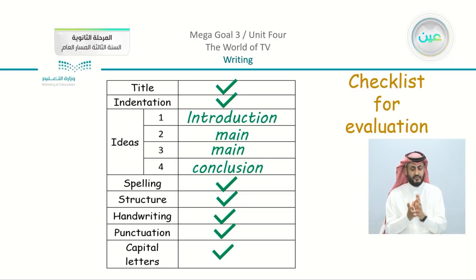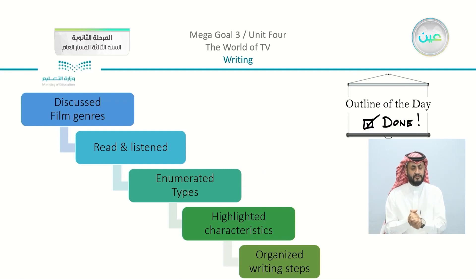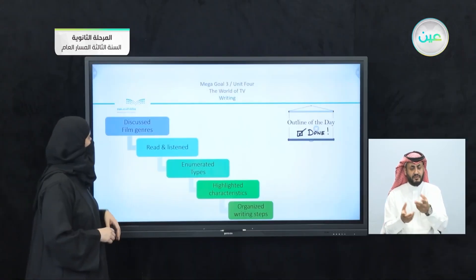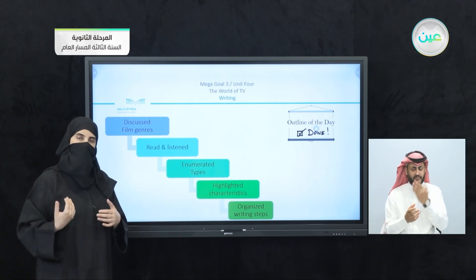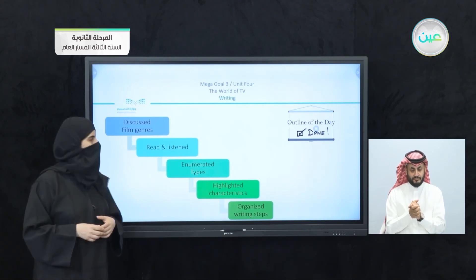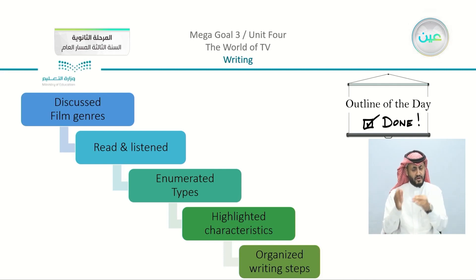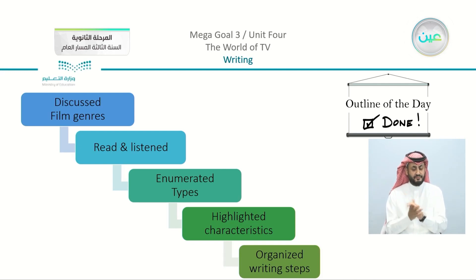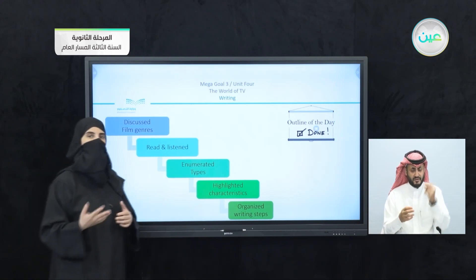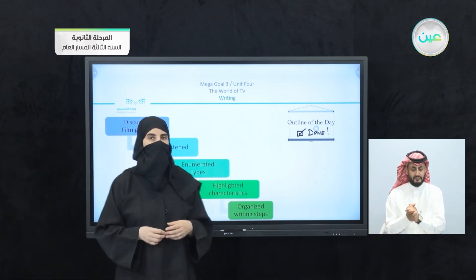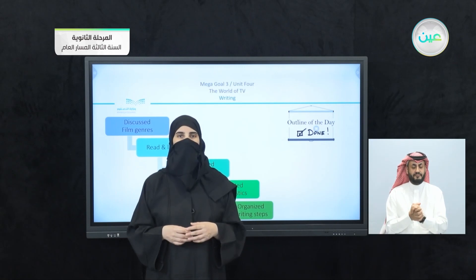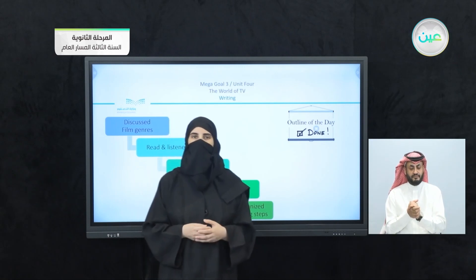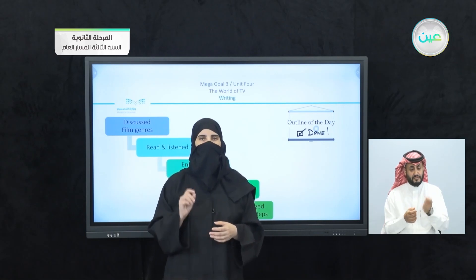This is the complete checklist for evaluation. We come to the end of our lesson. Our outline of the day was to discuss film genres. In our previous lesson, we read and listened to the basic text. We enumerated types, highlighted the characteristics, and organized writing steps that will be very useful when you start writing your essay. I am very sure that you are going to present excellent essays and think about film genres with a creative matter. Start writing, and good luck.